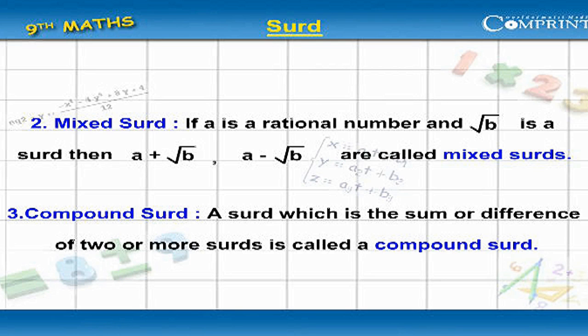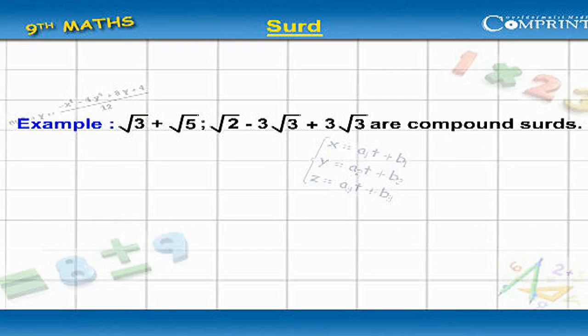Compound surds: A surd which is the sum or difference of two or more surds is called a compound surd. For example, root 3 plus root 5, root 2 minus 3 root 3 plus 5 root 3 are compound surds.